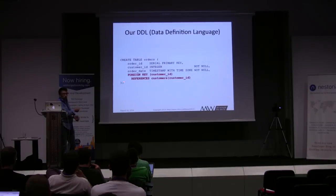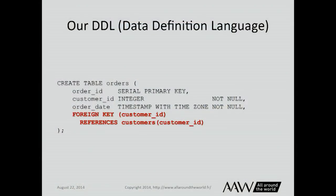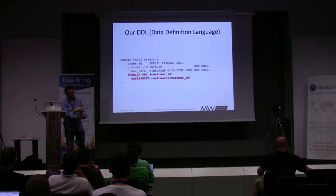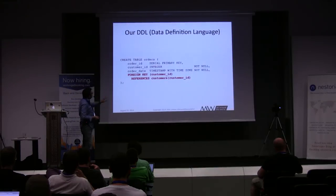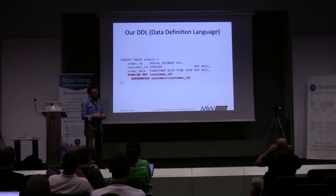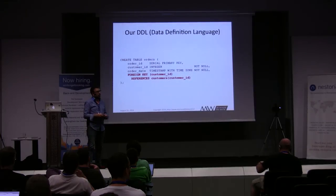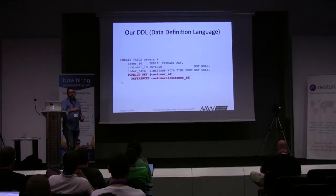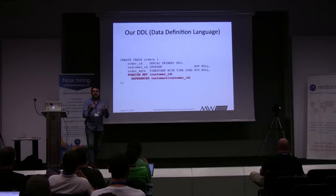PostgreSQL does not automatically create an index on a foreign key — just a trivia note for those who don't know that. Why put a foreign key on a table? Referential integrity. You cannot insert an order with a customer ID pointing to a customer that doesn't exist — it will blow up and protect your data's integrity. If you try to delete a customer that has orders attached, it won't let you, because you still have orders and we don't want dangling records.